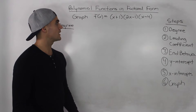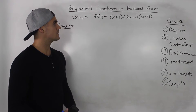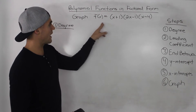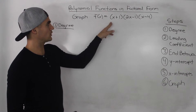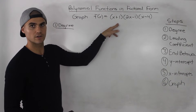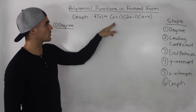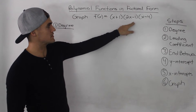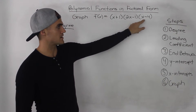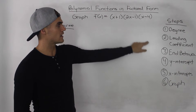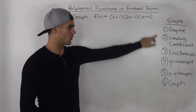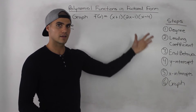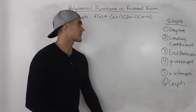What's up guys. So in this video, what we're going to do is graph this polynomial function in factored form: x plus one times two x minus one times x minus four. We're going to go through these six steps to graph it.